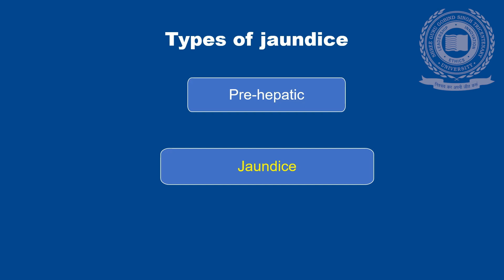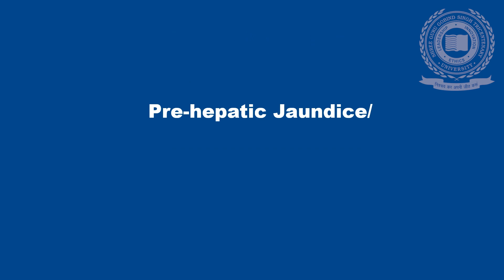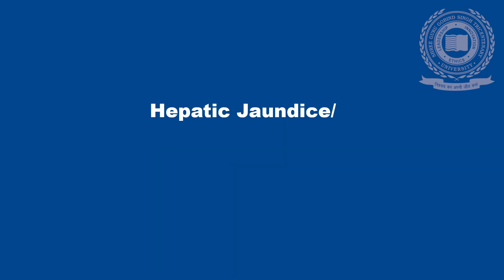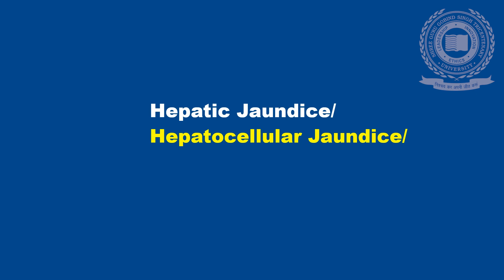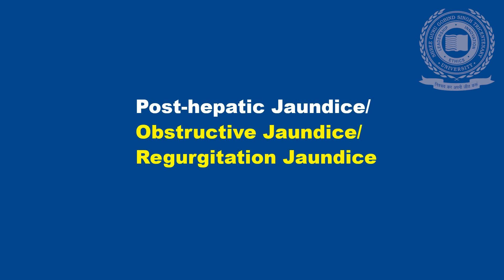Coming to the types of jaundice — there are three types: pre-hepatic, hepatic and post-hepatic. Pre-hepatic jaundice is also called hemolytic jaundice or retention jaundice. Hepatic jaundice is also termed hepatocellular jaundice or hepatotoxic jaundice. Post-hepatic jaundice is also termed obstructive jaundice or regurgitation jaundice.